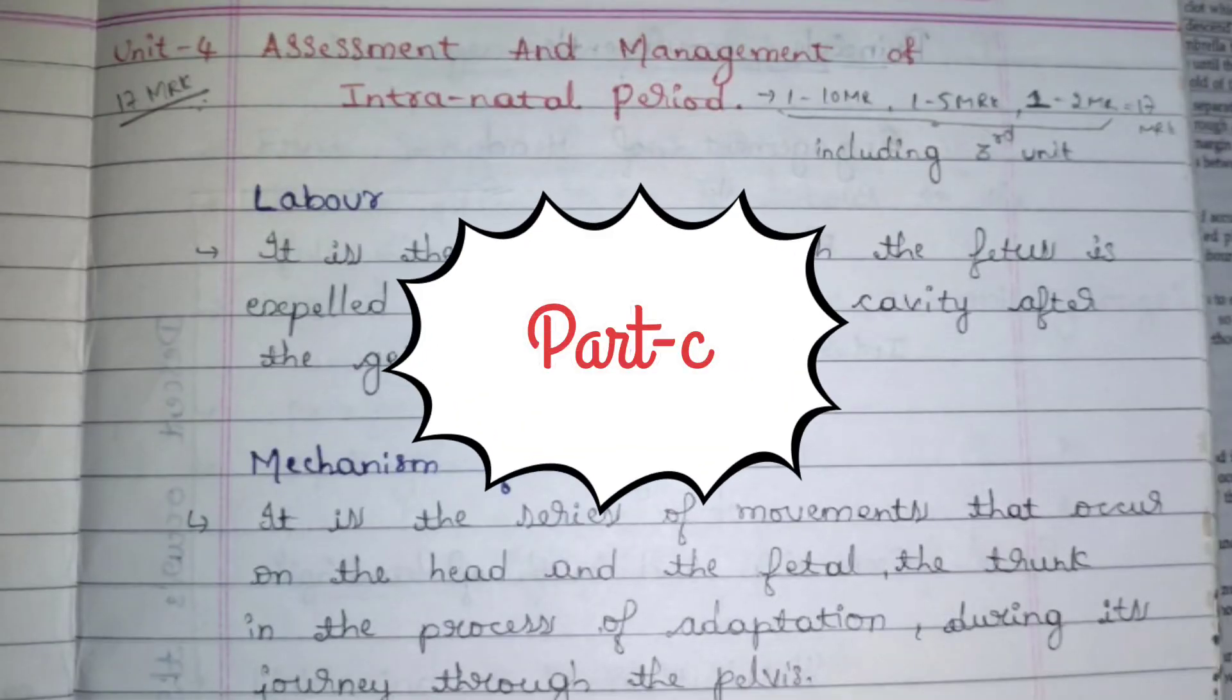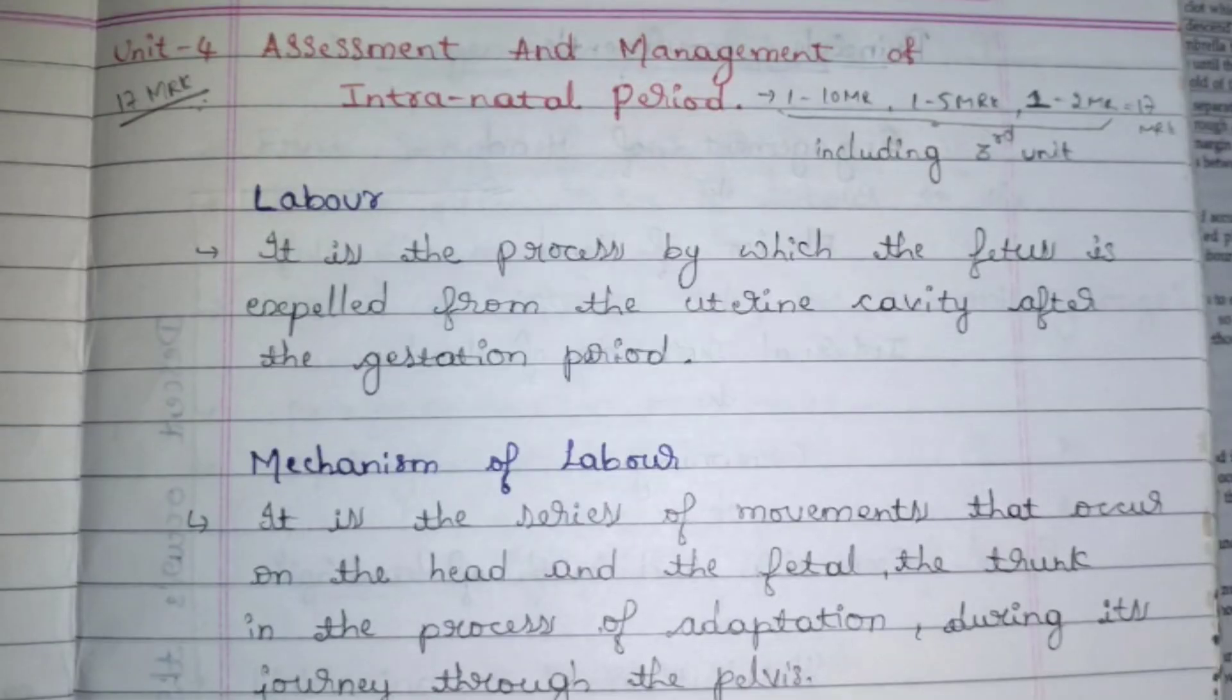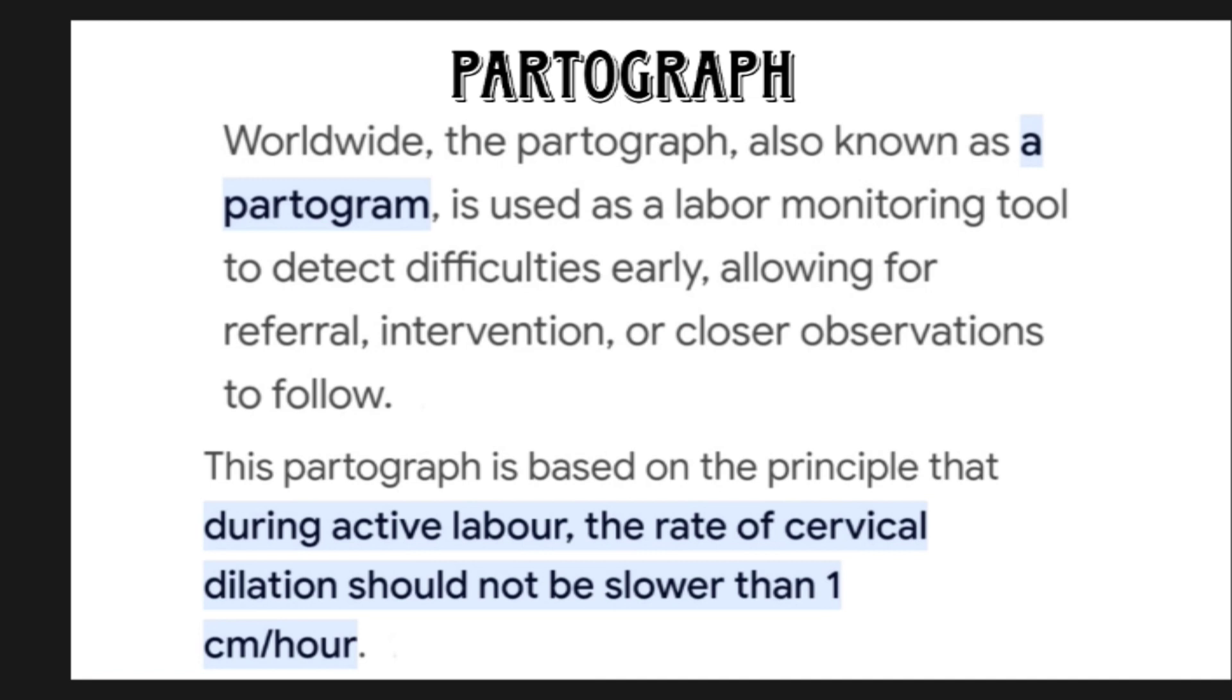Hello guys, it's Unit 4 Part C: Partograph, which is also known as Partogram. The definition of this is the graphical representation of data that is observed during labor, and this graphical representation is generally found on a single sheet. It is useful for monitoring labor and finding difficulties earlier.